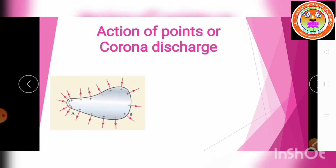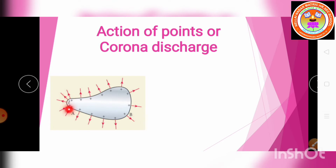Consider a charged conductor of irregular shape. Based on the previous topic, at point A where the radius of curvature is smaller, the charge distribution is greater. At point B the radius is somewhat greater. So smaller the radius of curvature, larger is the charge distribution. The end of the conductor which has large curvature — meaning smaller radius — has large charge accumulation.